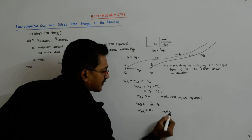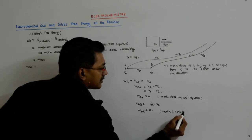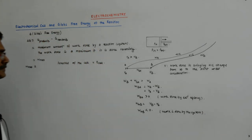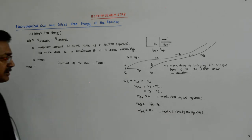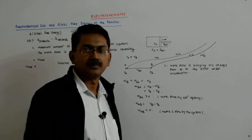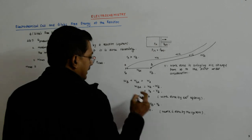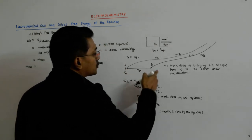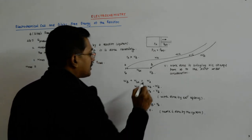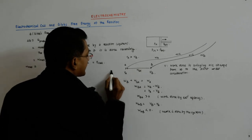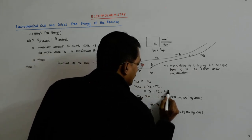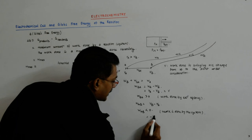Work is done by the system. Whenever the work is done by the system, we take it as negative. And if you move plus one coulomb, then the work done is simply the difference of the potentials. If I call the difference V-A minus V-B as V, then the work done going from B to A is V, and the work done going from A to B is minus V.